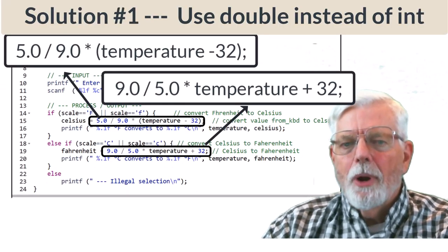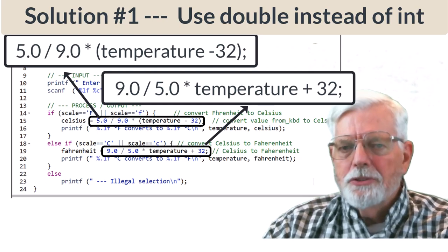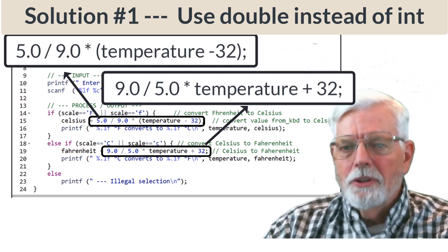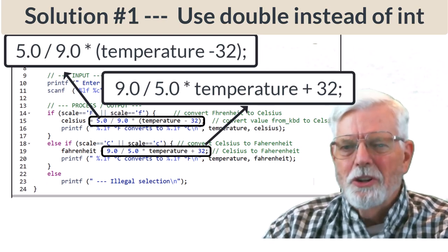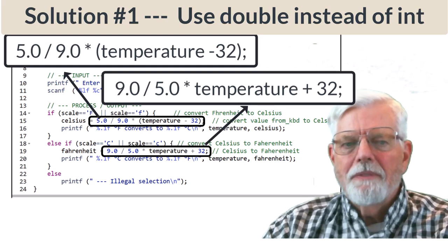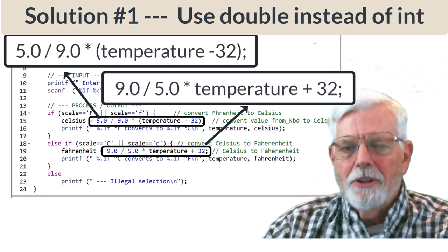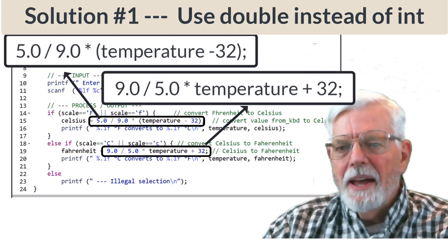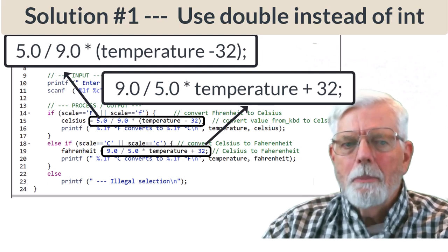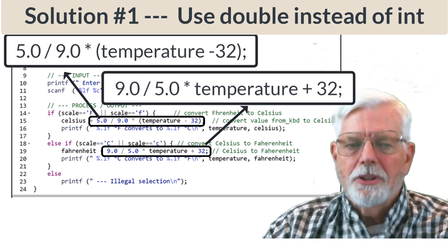One way to solve the problem is to use 5.0 divided by 9.0 so that we will be doing a floating point division instead of an integer division. The result will be 0.555556 instead of 0. We could even do 5.0 divided by 9 because the integer 9 will be promoted to a double because 5.0 is a double.